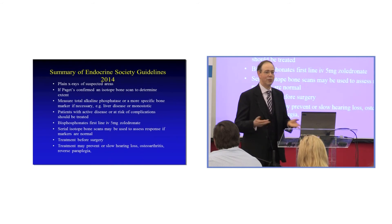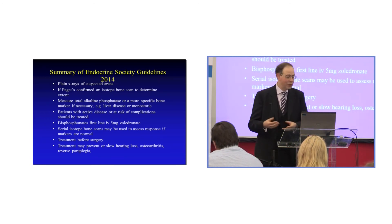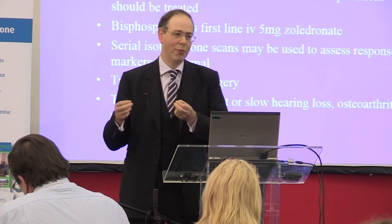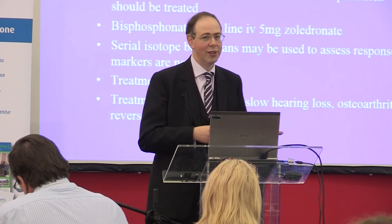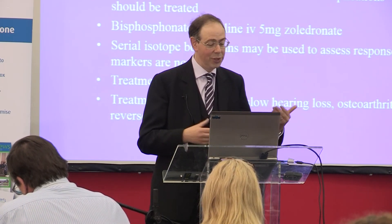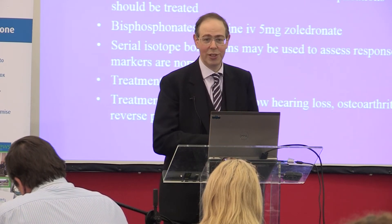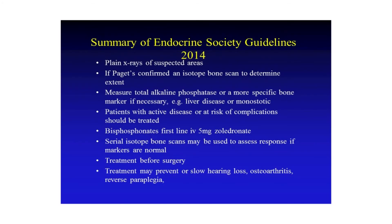Here are some highlights from those 2014 guidelines. They suggested that a plain simple X-ray is pretty good at diagnosing Paget's disease — the appearances are fairly characteristic. An isotope bone scan can be used to show which areas of bone are involved, which is important for management as it influences what complications you might get and how you treat someone. They talked about measuring alkaline phosphatase as a useful marker of bone activity.